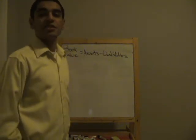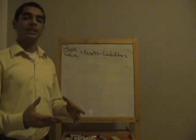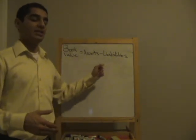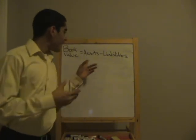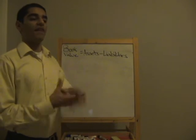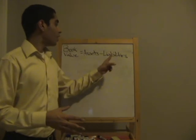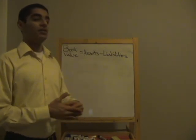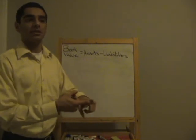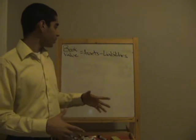Today I'm going to teach you what book value is. Book value is assets minus liabilities. Assets are what the company owns — things like factory buildings, products — what a company owns that it can sell for money. Liabilities, on the other hand, is what a company owes: debt, mortgage payments. These would be examples of liabilities.